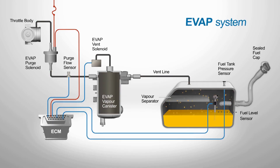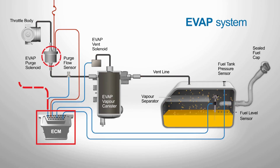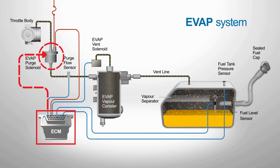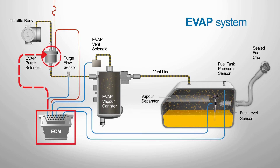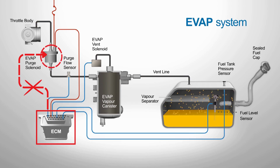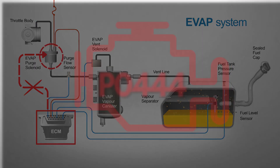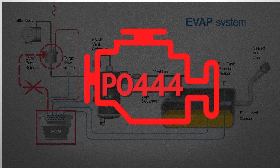Now let's look at why P0444 gets triggered. The purge valve is an electrically controlled solenoid, and it's the PCM's job to tell it exactly when to open and close so those trapped fuel vapors can be sent into the engine at the right time. But if something goes wrong, the PCM loses control over the purge valve, and that's when it throws the P0444 trouble code.